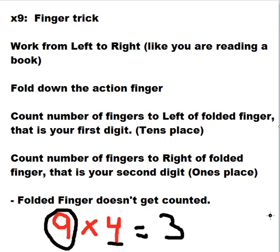Then we're going to count how many fingers are on the other side of that folded finger. Now that includes both hands. So you have one finger left, your thumb on your left hand, plus all five fingers of your right hand for a total of six fingers. So we're going to write down six. So the answer is 36.